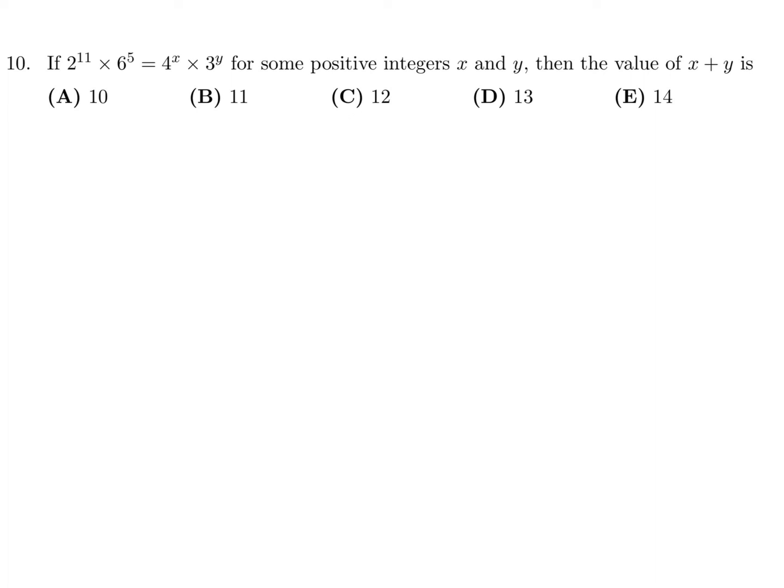If 2 to the power of 11 times 6 to the power of 5 is 4 to the power of x times 3 to the power of y, what is x plus y? So 2 to the power of 11 and 6 to the power of 5 is 4 to the power of x times 3 to the power of y. So obviously, we've got to get everything in the same bases. Well, let's just leave that for now. I'm going to split up 6 into 2 times 3.